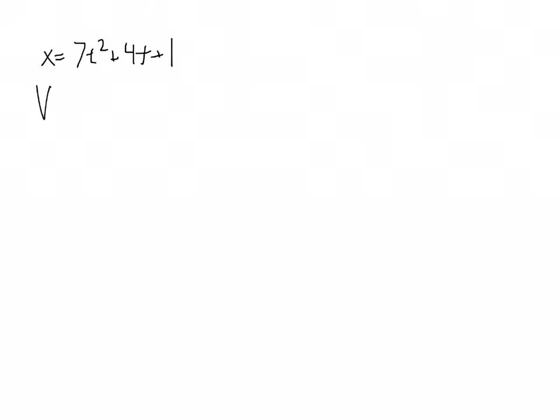I want to find out what the average velocity is for these time intervals where t is from 0 to 5 and also from 3 to 7. So we've got this function X equals 7t squared plus 4t plus 1.